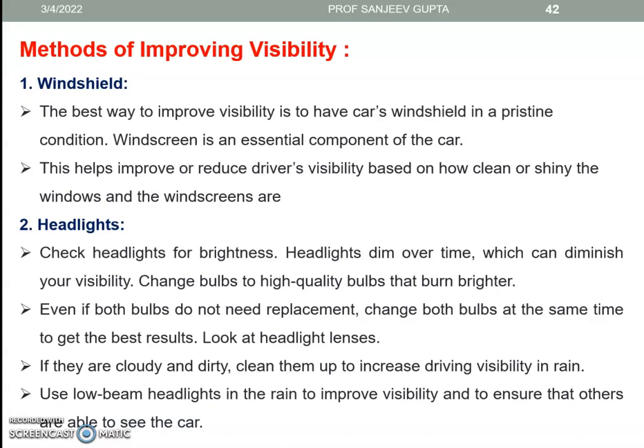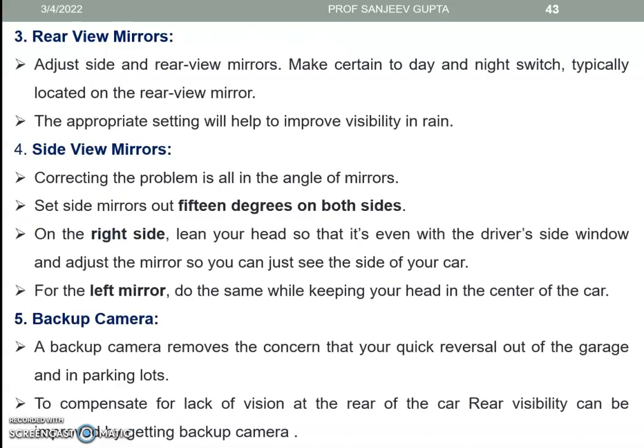To increase driving visibility in rain, use low beam headlights to improve visibility and ensure that others can see the car. Number three — rear view mirrors: adjust side and rear view mirrors. Make certain to use the day and night switch, typically located on the rear view mirror; the appropriate setting will help improve visibility in rain. Number four — side view mirrors: correct the angles of the mirrors. Set side mirrors 15 degrees on both sides. On the right side, lean your head so it is even with the driver-side window and adjust the mirror so you can just see the side of your car.